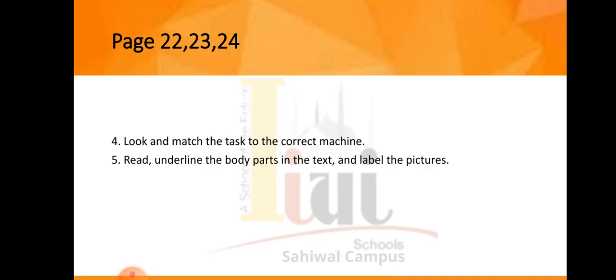Now turn to page number 23. Look at the top of the page: read, underline the body parts in the text, and label the pictures. You have to read three different paragraphs. A lever is a tool that can move things and is a simple machine. A shovel is a lever — it can move dirt. You can use your arms as a lever to pick things up.